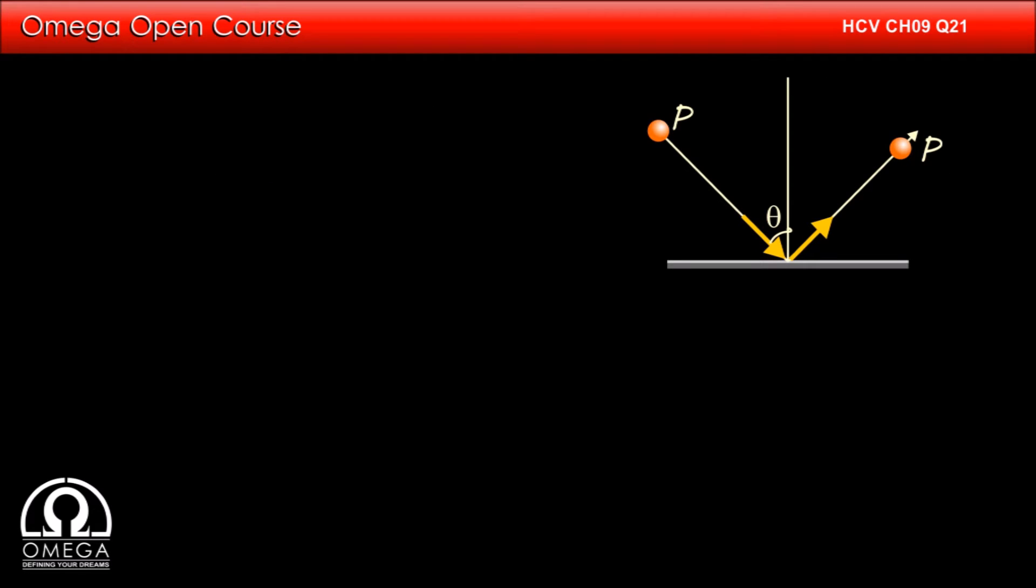We know from the laws of reflection that the angle of incidence and angle of reflection is equal. Therefore, the reflected beam makes an angle theta with the normal.